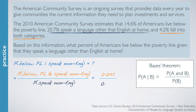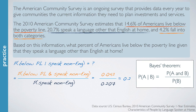And 20.7% speak a language other than English at home, so the marginal in the denominator is 0.207, which gives us a conditional probability of roughly 0.2, meaning that roughly 20% of Americans who speak a language other than English at home also live below the poverty line. Comparing this to the general public — 14.6% of all Americans live below the poverty line — living below the poverty line appears more prevalent for people who speak a language other than English at home. This finding suggests that language spoken at home and poverty level may be dependent.